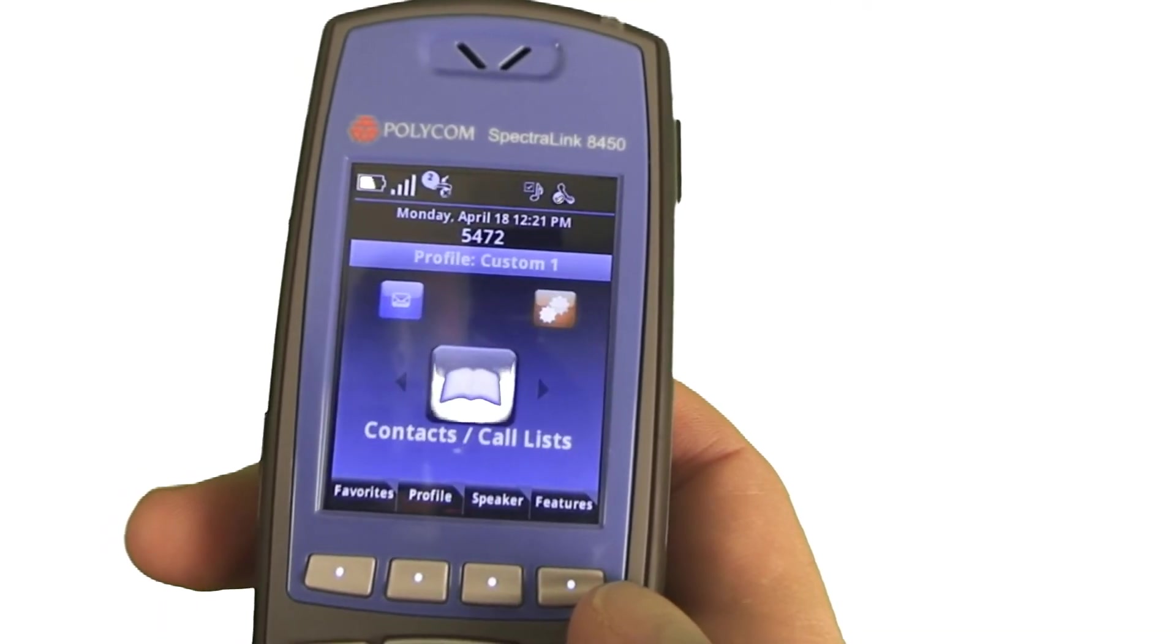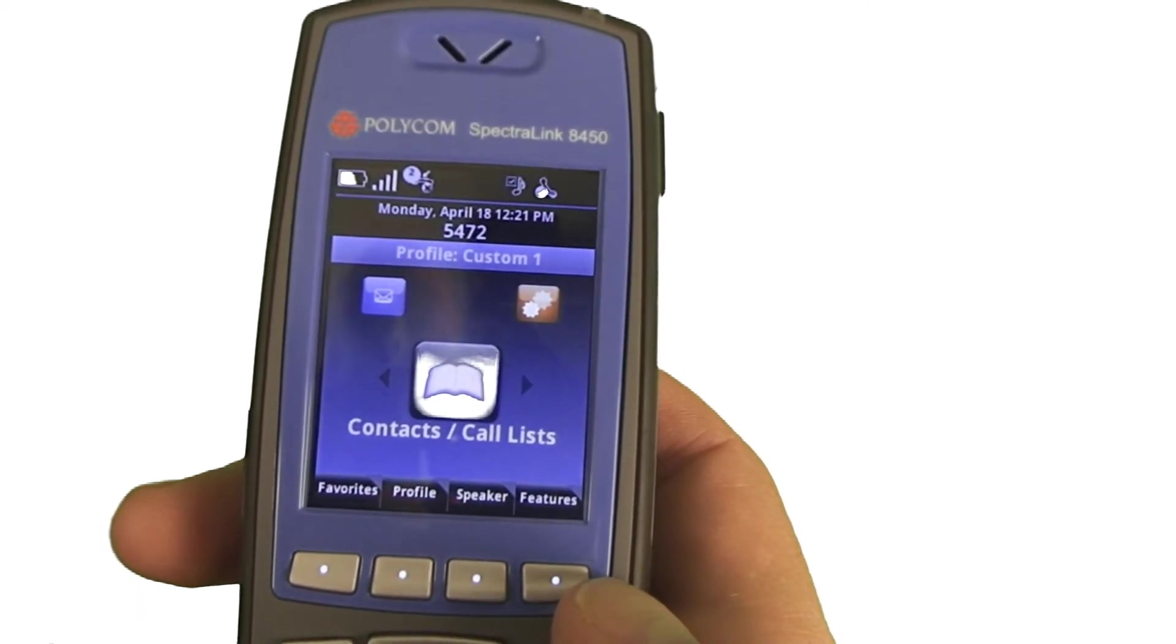Then you'll notice on the handset at the top of the screen it'll show me my user extension that I have, it'll show me the particular profile, whether it's loud, normal, or silent.